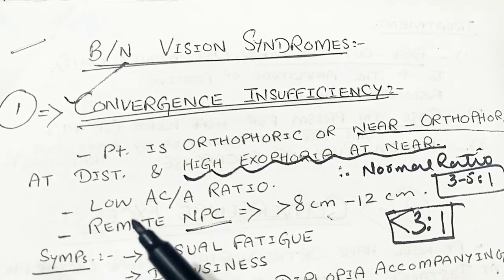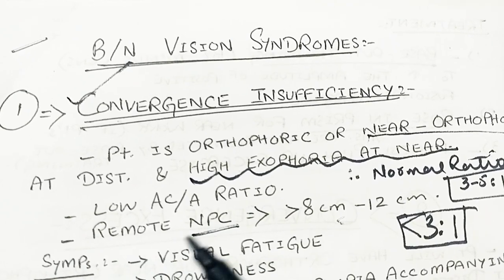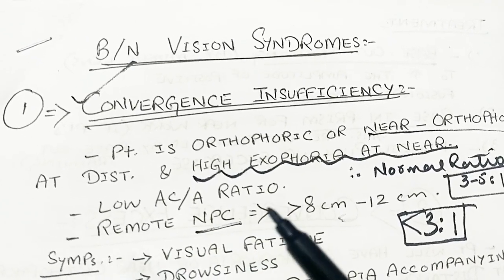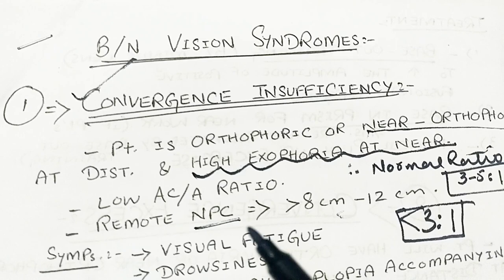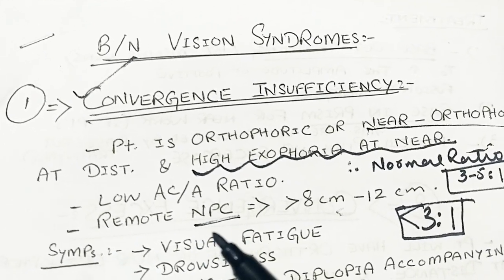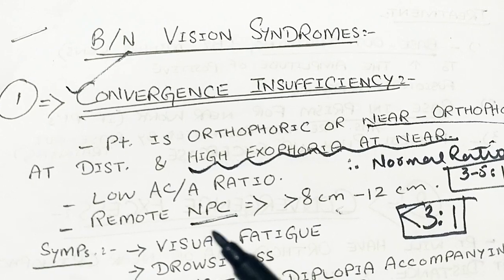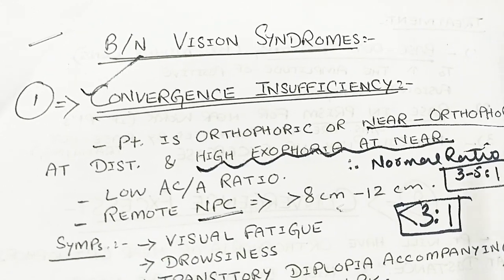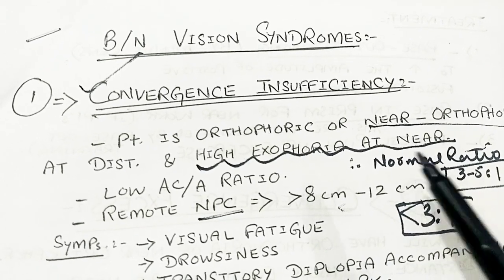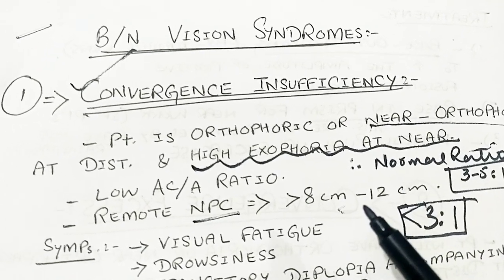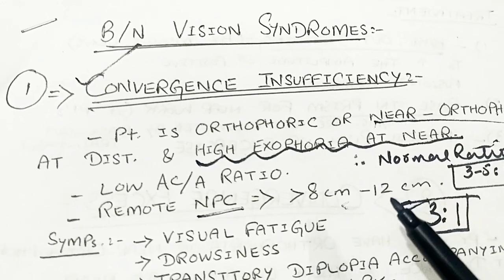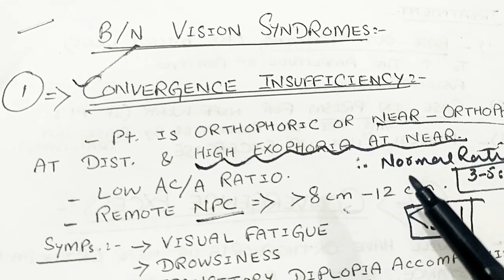In convergence insufficiency, the patient has a low AC/A ratio and a remote NPC — near point of convergence. Remote means the near point of convergence is at more than 8 to 12 cm; it could be 15 cm, 25 cm, 30 cm, or even 50 cm.